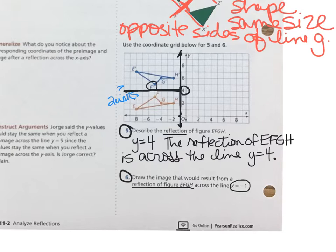I'm going to take my green pen in order to do that reflection. Notice that point H is only one unit from that line. So H prime will be also one unit from that line.